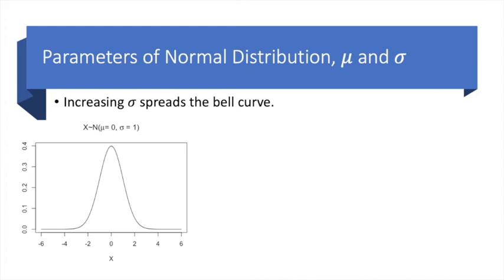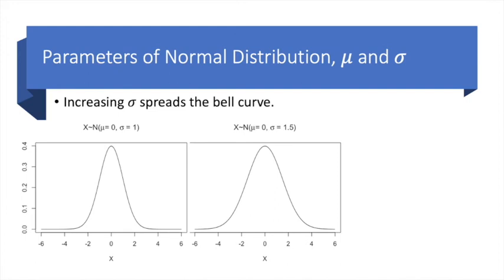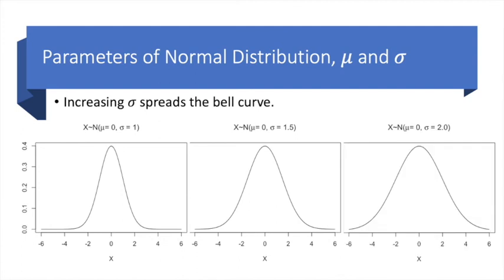When sigma equals 1, the distribution looks like this. However, when sigma increases to 1.5, the distribution spreads out. Likewise, when we increase the standard deviation to 2, it spreads even more. And so the trend continues.